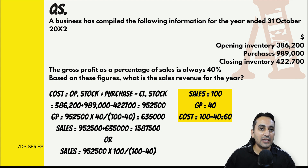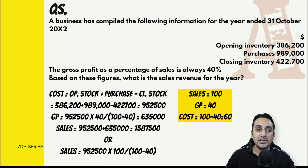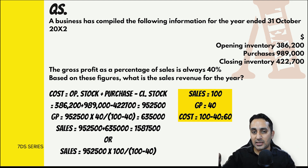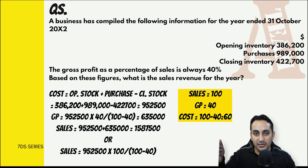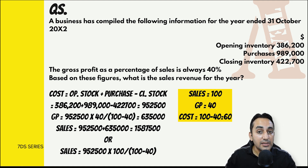सबसे पहले देखा कि percentage on sales है यानी margin है, तो sales को 100 रखा। Sales ज़्यादा है तो cost कम आती है, इसलिए 100 में से 40 minus करने पर cost 60 पर आए। फिर question में cost दे रखा था इसलिए denominator में 100 नहीं 60 का इस्तेमाल किया - and that's it।